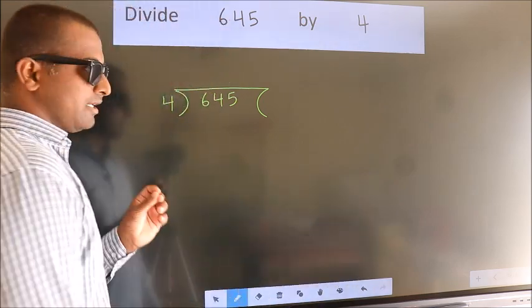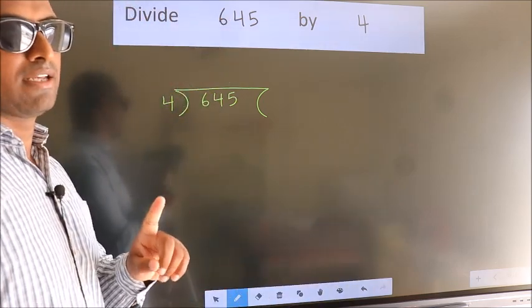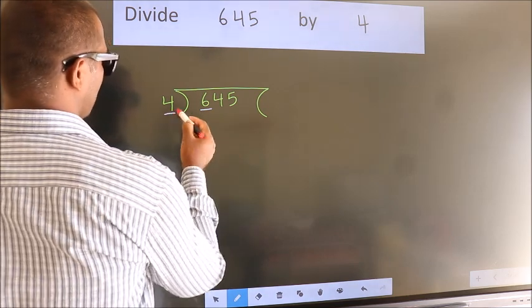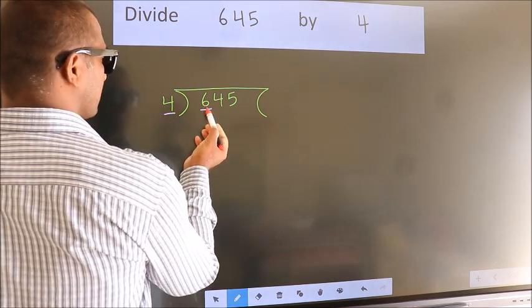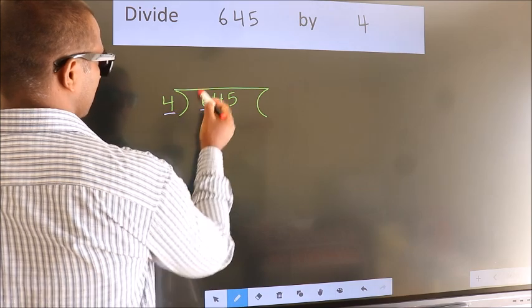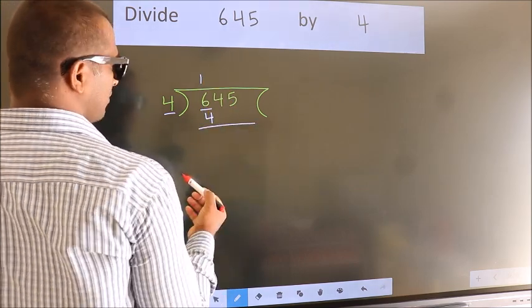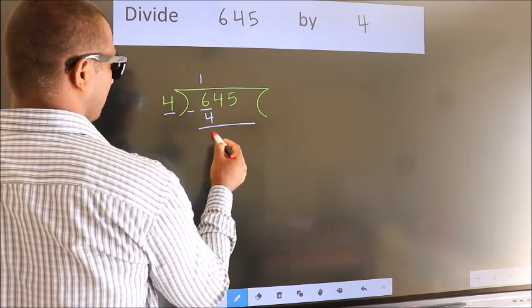This is your step 1. Next, here we have 6, here 4. A number close to 6 in 4 table is 4 once 4. Now, we should subtract. We get 2.